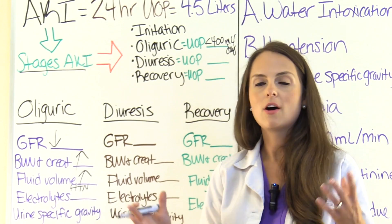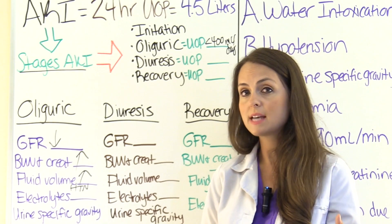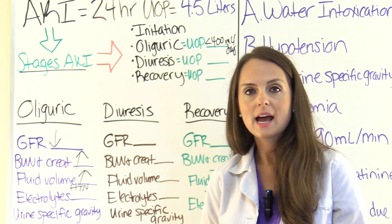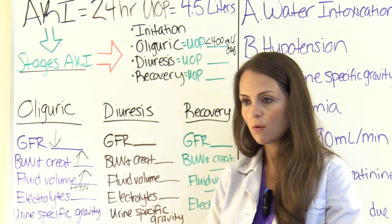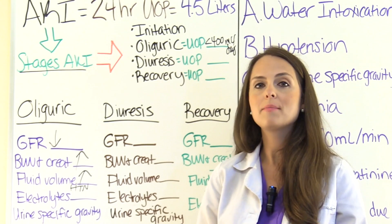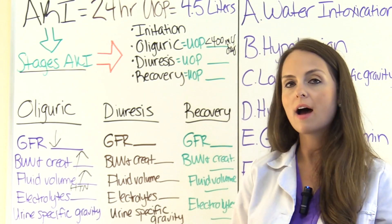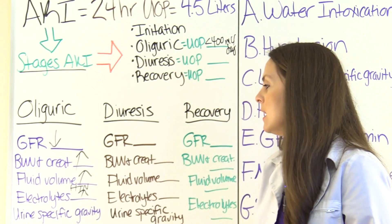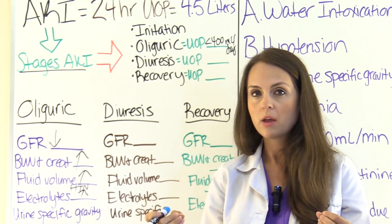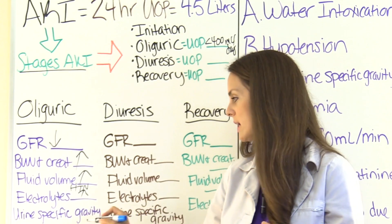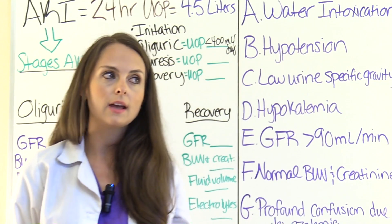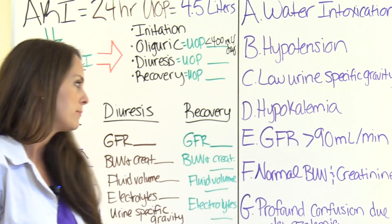Electrolytes are going to be all out of whack in the oliguric stage. Specifically, potassium levels will rise — hyperkalemia — because the glomerulus isn't filtering it out. We'll also see hyperphosphatemia, which decreases calcium levels, causing hypocalcemia, and high magnesium levels — hypermagnesemia. So we're dealing with high electrolytes except for calcium. The urine specific gravity will be high, as any urine produced is very concentrated and dark-colored.